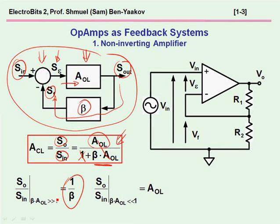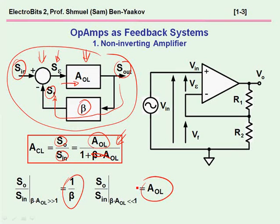When beta-a is smaller than 1, beta-a can be neglected and we end up only with the gain of the amplifier. This makes sense, of course, because if there is no feedback — that is, beta is very, very small — we just have the forward part between the input and the output.